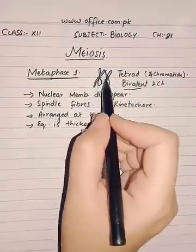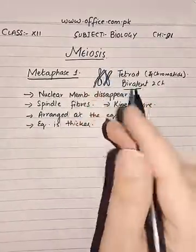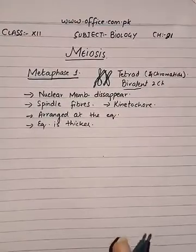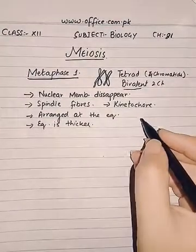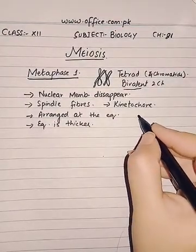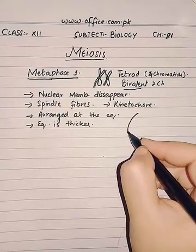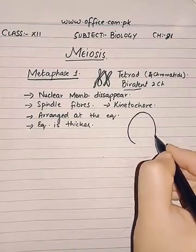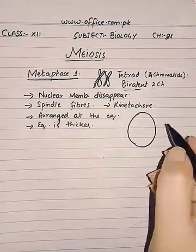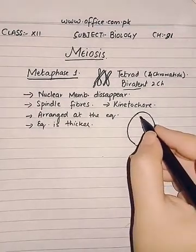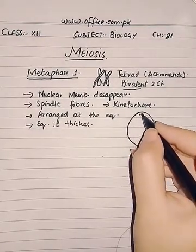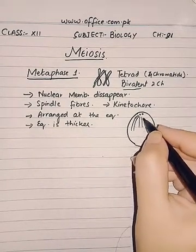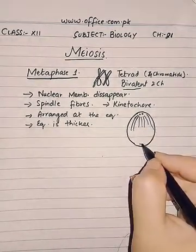In metaphase one, the equator becomes much thicker compared to other phases because the chromosomes are arranging at the equator. Let us see this with the help of a diagram. This is the cell — the nuclear membrane has disappeared. These are the spindle fibers.